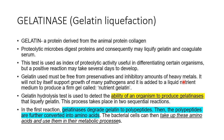Gelatin itself does not support growth of many pathogens, but it is added to liquid nutrient medium to produce a firm gel called nutrient gelatin. This gel-formation property is what we use as the indicator for positive or negative results. The gelatin hydrolysis test detects the ability of an organism to produce gelatinase, which liquefies gelatin through two sequential reactions: first, gelatinase degrades gelatin to polypeptides, and then polypeptides are further converted to amino acids.